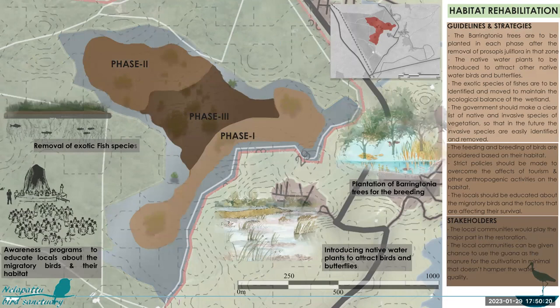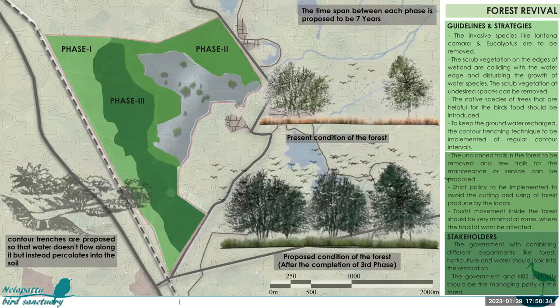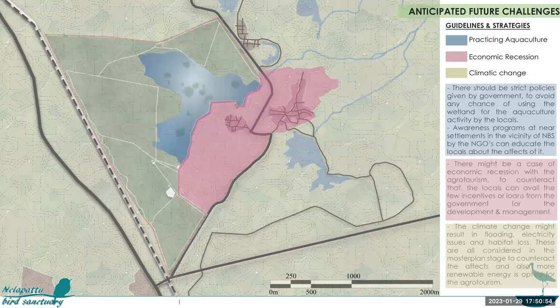For habitat rehabilitation, I've come up with awareness programs and guidelines to introduce more native bird and water species into the site. For forest revival, I've proposed contour trenches — since the site is not very steep, these create undulations and let water percolate. Guidelines for government stakeholders and local participation are given, along with anticipated future challenges: a chance of aquaculture practice, economic recession, or climatic change — and guidelines for addressing each. A tourism potential map was also developed.